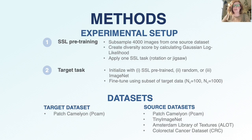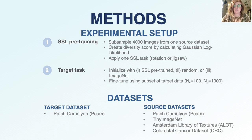For our experimental setup, we took a two-stage approach. In stage one, we subsampled 4,000 images from a single source dataset. We then embedded these images into a pre-trained feature embedding and calculated the Gaussian log likelihood score, representing dataset diversity. After this, we completed training using one self-supervised task, either rotation or jigsaw. In stage two, we initialized the models in one of three ways: using weights from self-supervised pre-training, using random weights, or using pre-trained weights from ImageNet. These were then fine-tuned with a small subset of the target dataset.